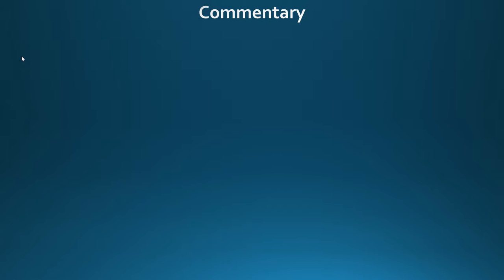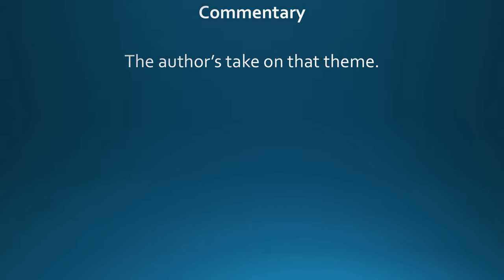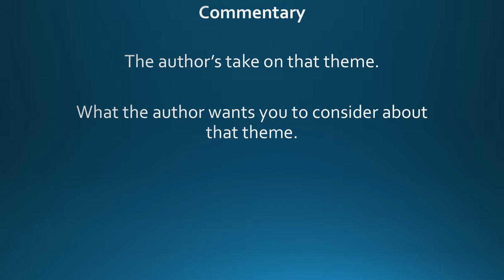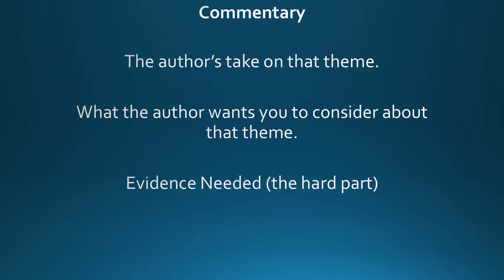Then we have commentary, and this is where students have a little bit of trouble making the leap. They get theme, or they're often able to say this theme is present in the story. But the next step is the commentary — what is the author's take on that theme? It's not enough to say this story has this theme; the student has to take the next step and say this theme is to be understood in this way by this author. What we're thinking about is what the author wants you to consider about that theme. You might want to focus on one theme at a time and identify the theme and what the author thinks about it. In order to get there, you need evidence — you need to make sure you get evidence to actually justify or prove that this is the author's commentary.